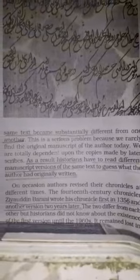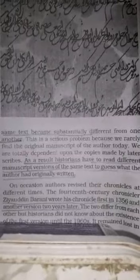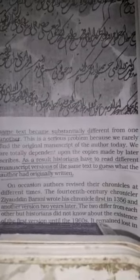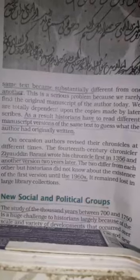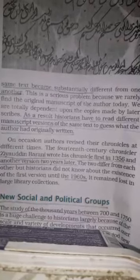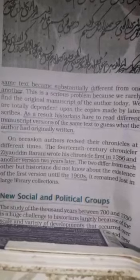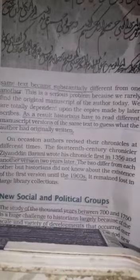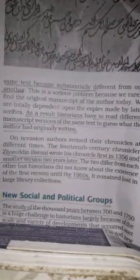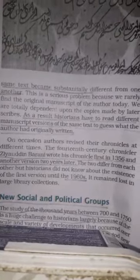As a result, many manuscripts were different from one another. So historians had to read different manuscripts to understand the original text written earlier. For example, in the 14th century, chronicler Ziauddin Barani wrote his chronicle first in 1356 and then another version two years later. When historians studied both texts, they found they were different from each other.